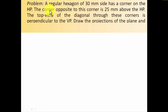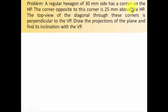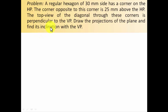A regular hexagon of 30mm side has a corner on the HP. The corner opposite to this corner is 25mm above the HP. The top view of the diagonal through these corners is perpendicular to the VP. Draw the projections of the plane and find its inclination with the VP.